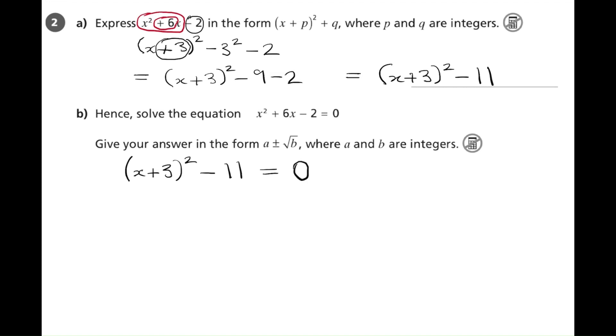And then our task is to isolate the x. So if we add 11 to both sides, we get x plus 3 all squared is equal to 11.